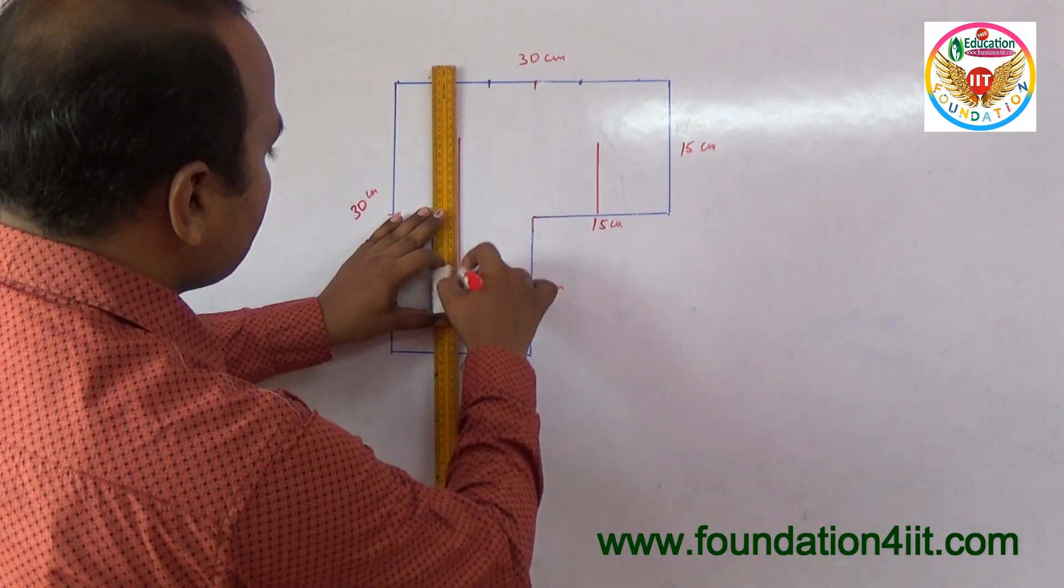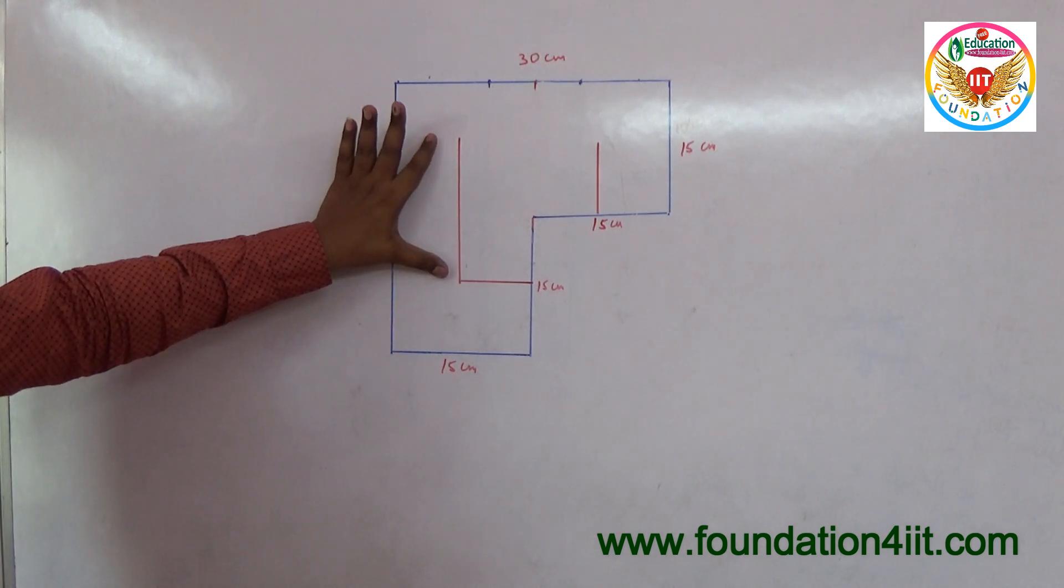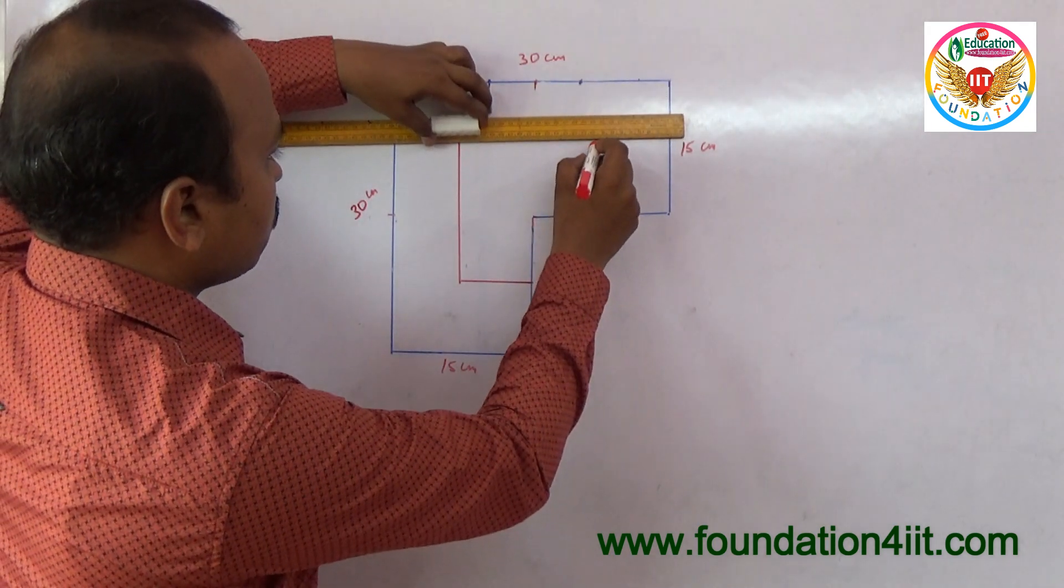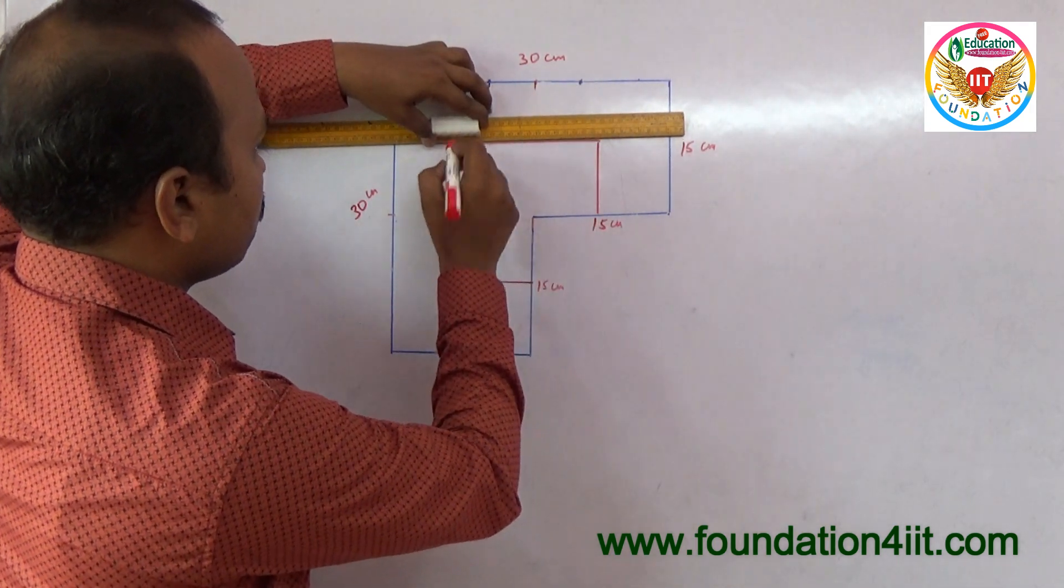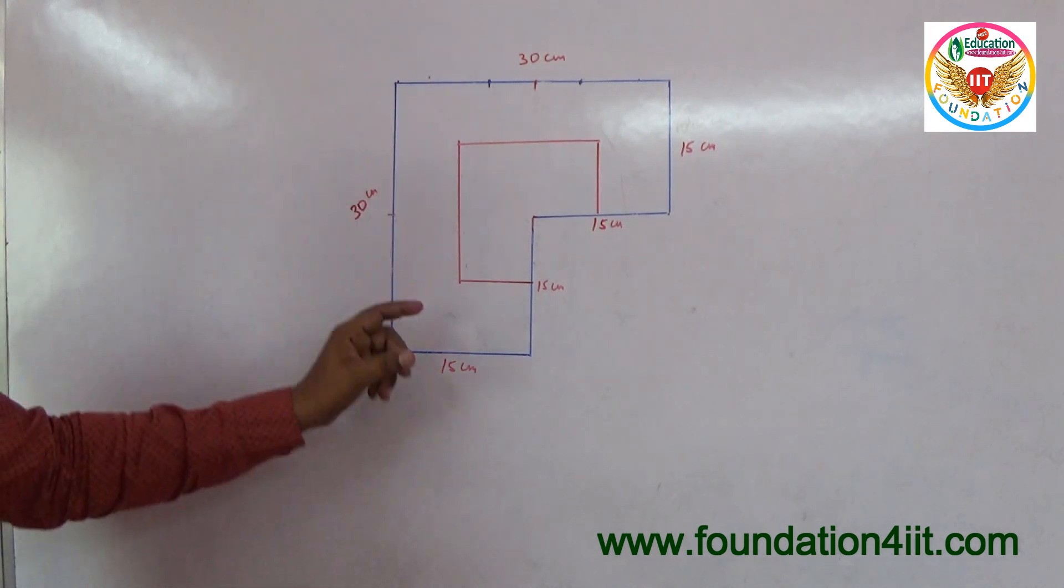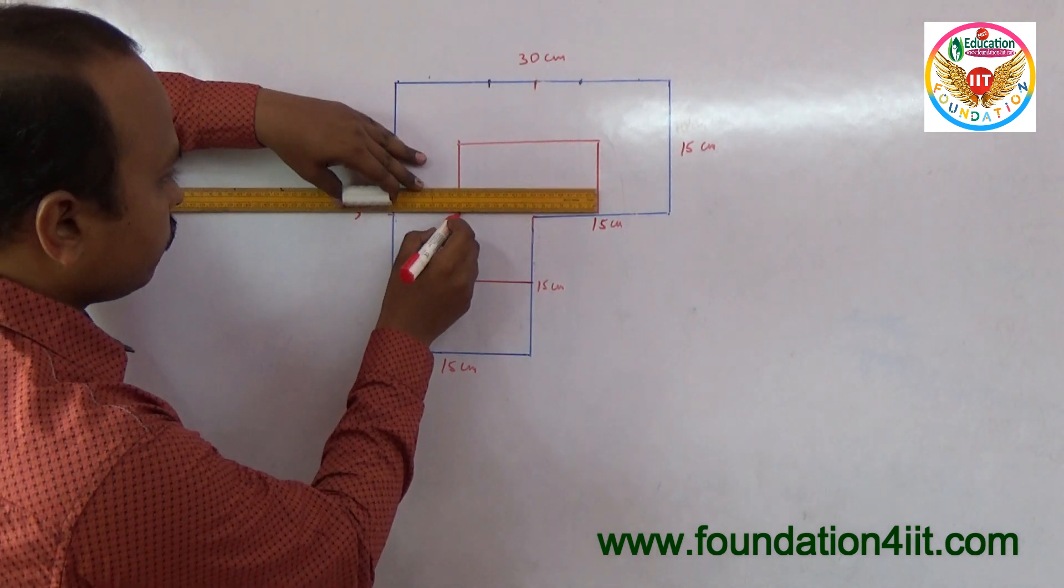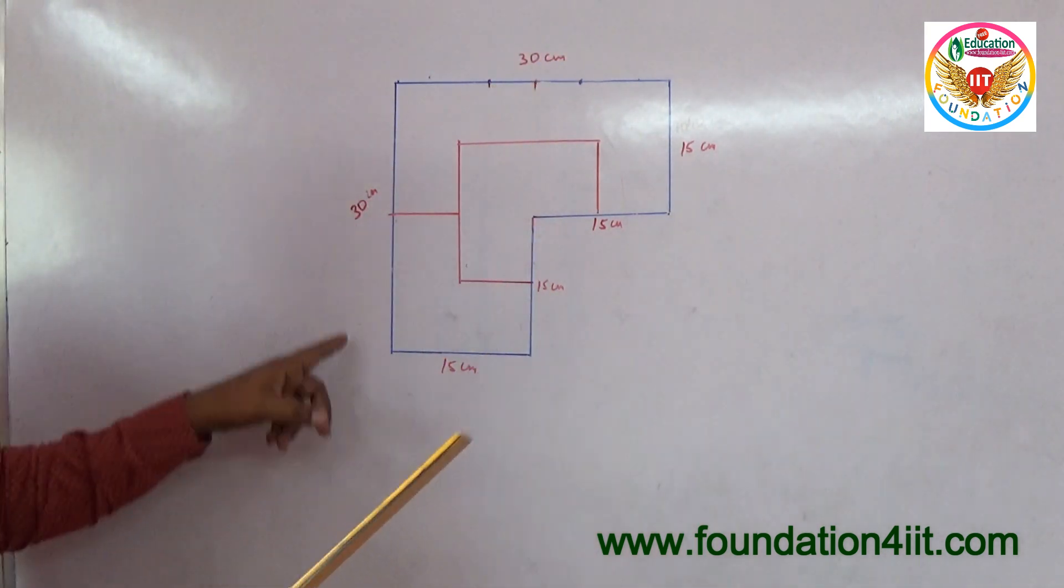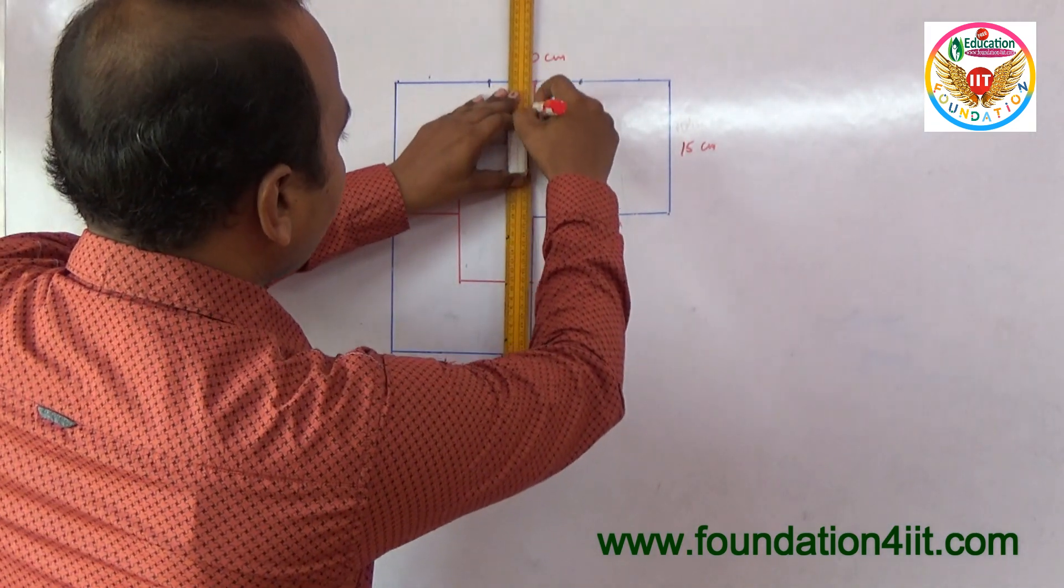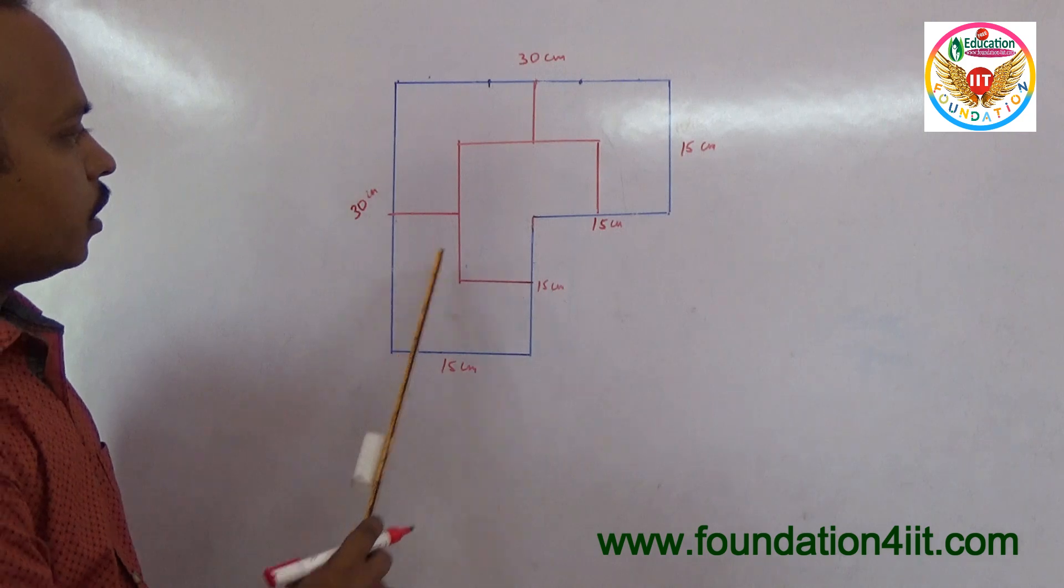Extend this part up to the same 15 centimeters and join this. Here to here is only 7.5 centimeters. Join the center points: out of 30, at 15, you can extend this. And out of 30, at the center, just drop perpendicular lines. So one, two, three, and four.